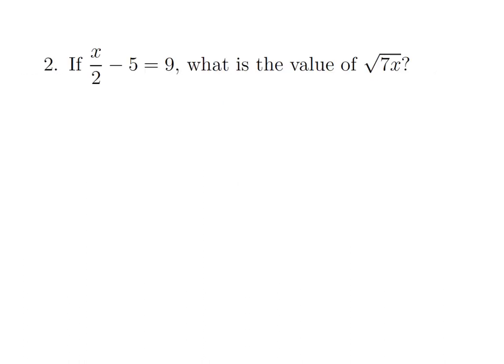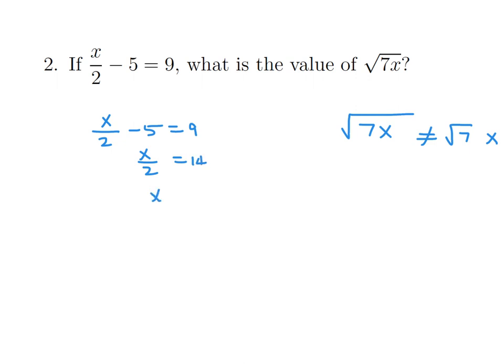If the square root of (x over 2 minus 5) is 9, what is the value of the square root of 7x? Everything is under the square root sign — don't make the mistake of reading it as 7 times x. So x over 2 minus 5 equals 9, meaning x over 2 equals 14, and x equals 28. Substituting: square root of 7 times 28 equals square root of 196, which is 14.